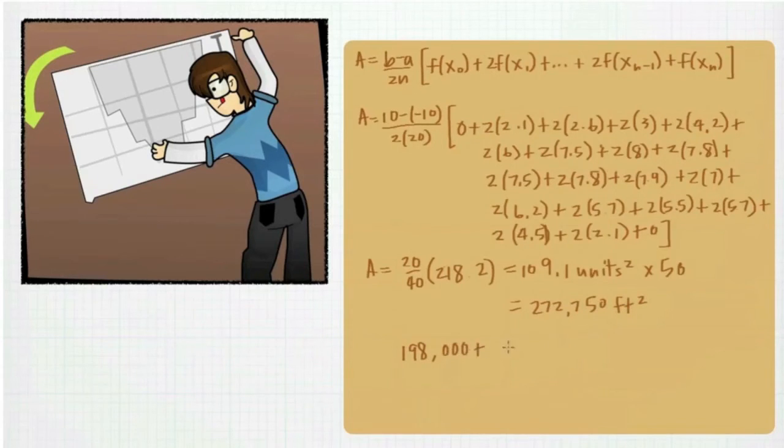Finally, he adds both areas together to find the square footage of the entire cross section, which is 479,750 square feet.